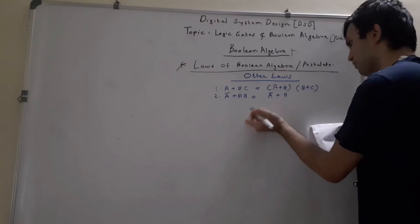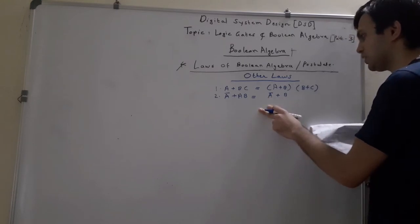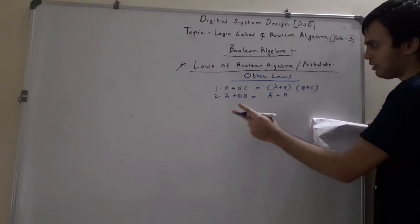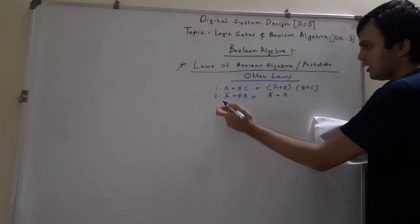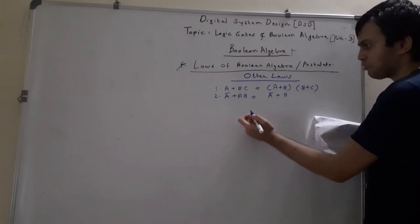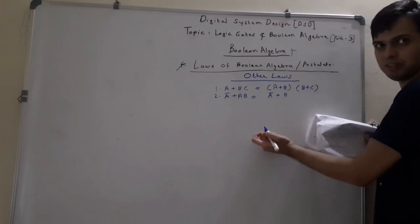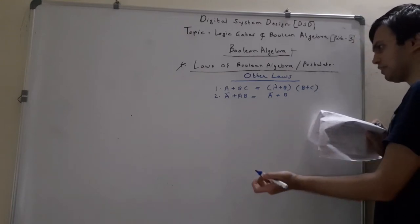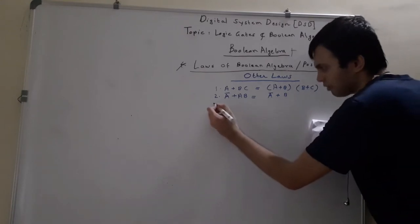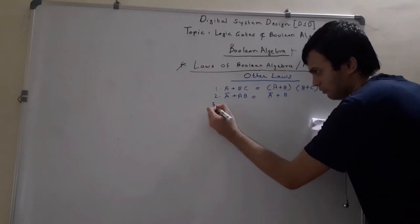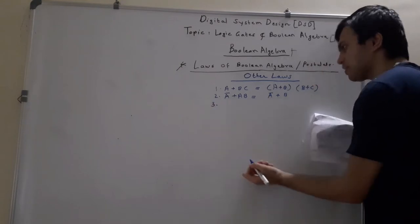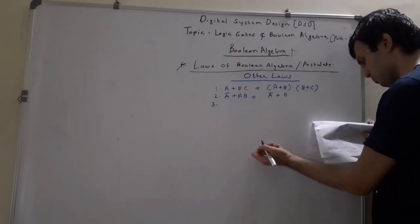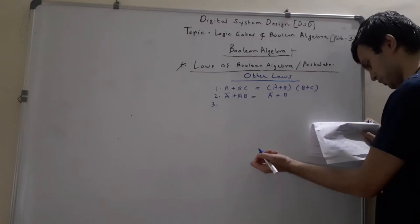If you want to check the validity of these laws, you can assign various different values to the Boolean variables and verify you get the same result. But for now there is no need to check — just remember these laws for simplification.